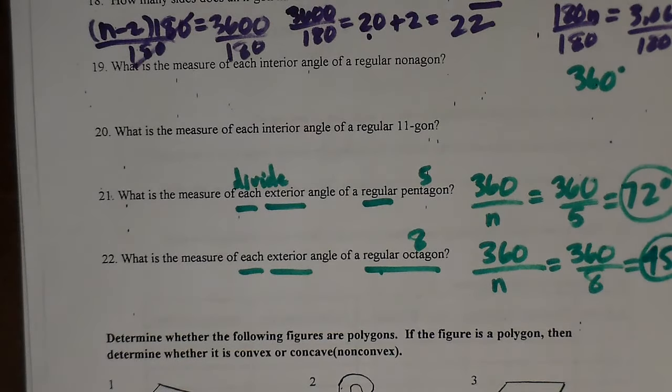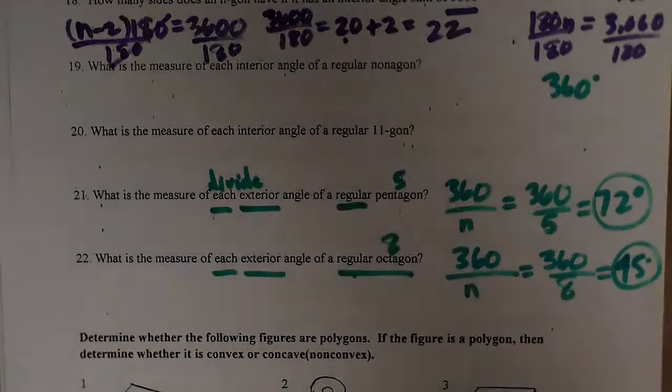So that's how you find the measure of each exterior angle. And remember, the exterior angle sums are always 360 in every polygon, always 360.